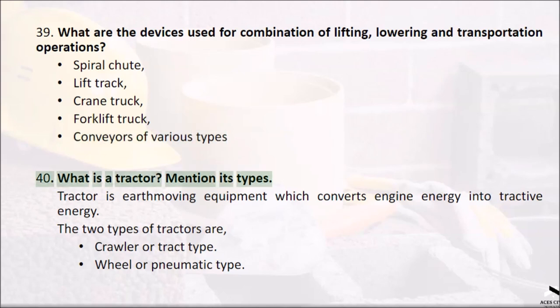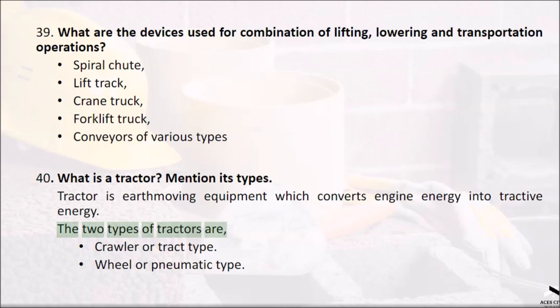Question 40: What is a tractor? Mention its types. A tractor is earth moving equipment which converts engine energy into tractive energy. The two types of tractors are: crawler or track type, and wheel or pneumatic type.